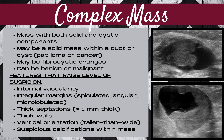This type of complicated cyst can mimic the appearance of an avascular solid mass. The third category of breast cyst is known as a complex mass. This is a mass that has both solid and cystic components and may be a solid mass within a milk duct or within a cyst. A papilloma or cancer is always a concern with a complex mass. However, this could also be fibrocystic changes. A complex mass can be either benign or malignant, so it's important to pay attention to the features of that specific mass.